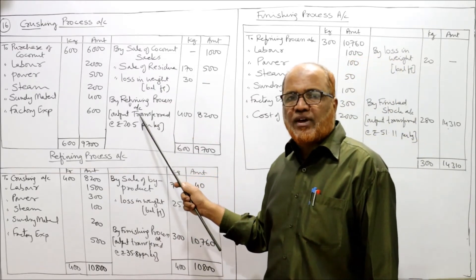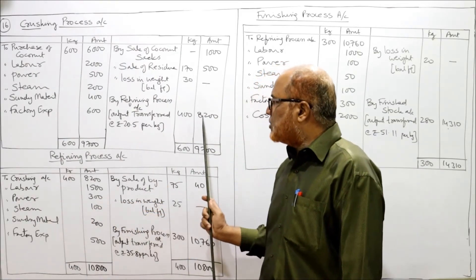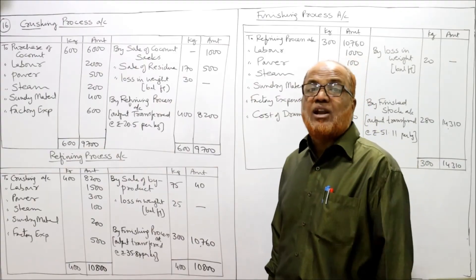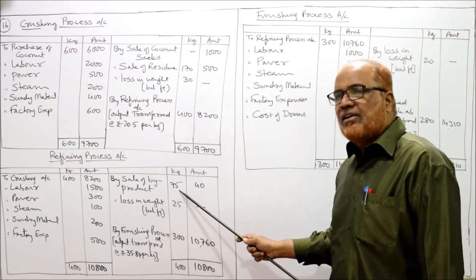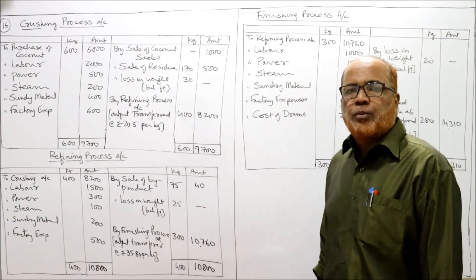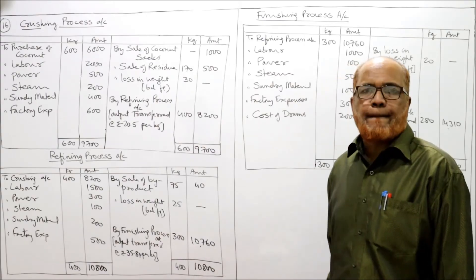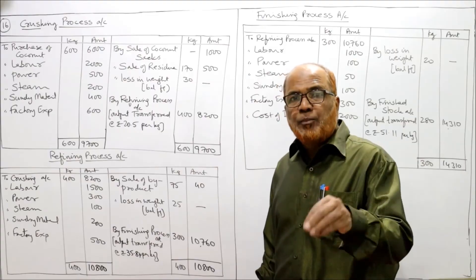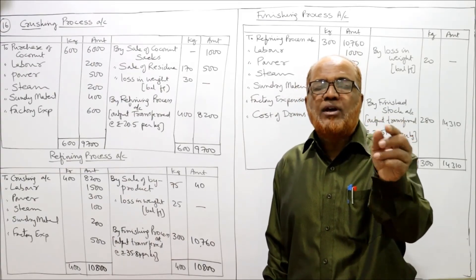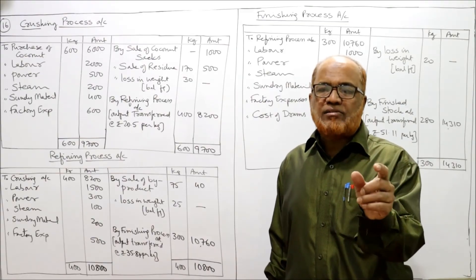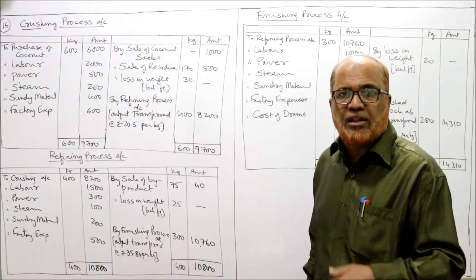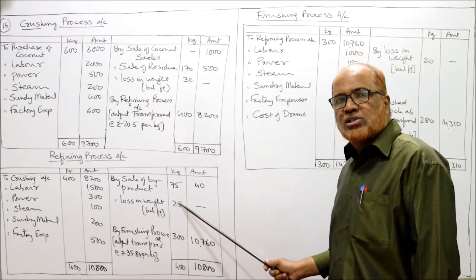Now the second process, refining. Output of crushing becomes input for refining: to crushing account 400 kilograms, value rupees 8200. Then power, labour, steam, sundry material, factory expenses on the debit side. Credit side: sale of byproduct — 75 kilograms sold for rupees 40. Output to finishing process: 300 kilograms. Input was 400; 400 minus 75 should give 325, but the problem gives 300 — so remaining 25 kilograms is loss in weight, balancing figure.